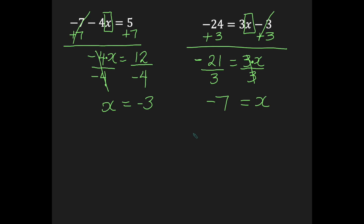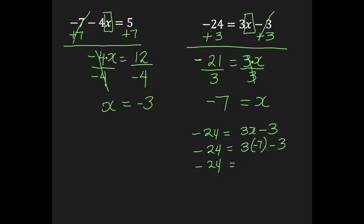If you want to check: negative 24 equals 3x minus 3. The x worked out to be negative 7, so replace x by negative 7: 3 times negative 7 minus 3. 3 times negative 7 is negative 21, subtract 3. When negatives are following each other, add: 21 plus 3 is 24, and keep your sign. On the right-hand side I get negative 24, which is equivalent to the left-hand side, negative 24. Answer is correct.